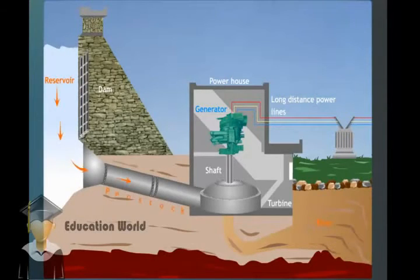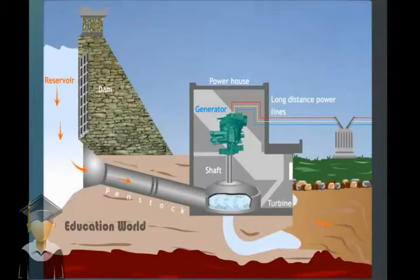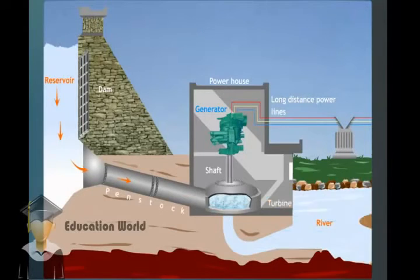Water flows through the penstock and rotates the turbine. The flowing water rotates the turbine, which is placed at the end of the penstock.